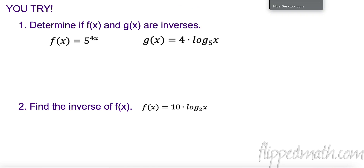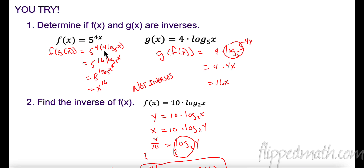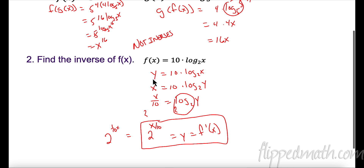Pause the video and try these two questions on your own. For the composition check: putting g of x in gives four times four equals sixteen, so log base five of x to the sixteenth. That cancels to x to the sixteenth — not just x. For g of f of x: plugging in five to the 4x cancels and gives sixteen x. Since neither equals just x, they're not inverses. For finding the inverse: swap y and x, divide by ten, then exponentiate with base two. The result is two to the x over ten equals y.